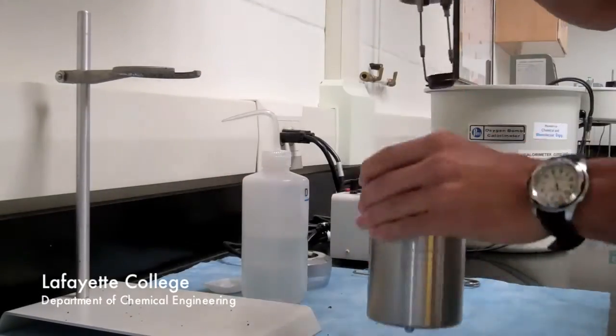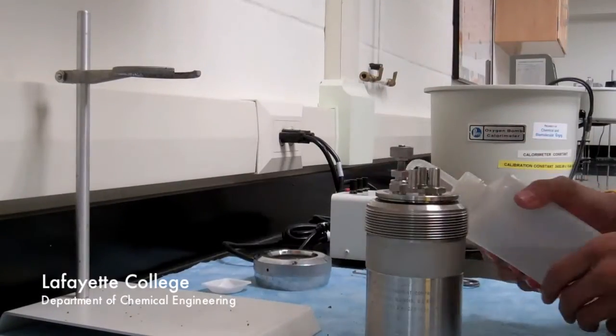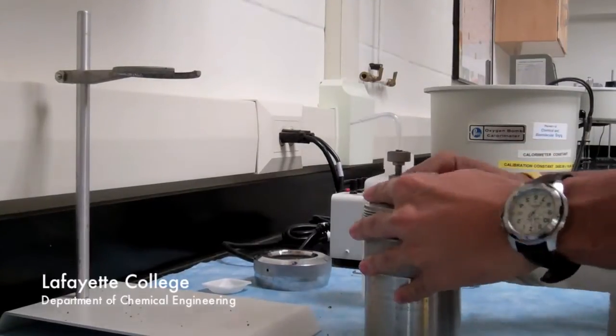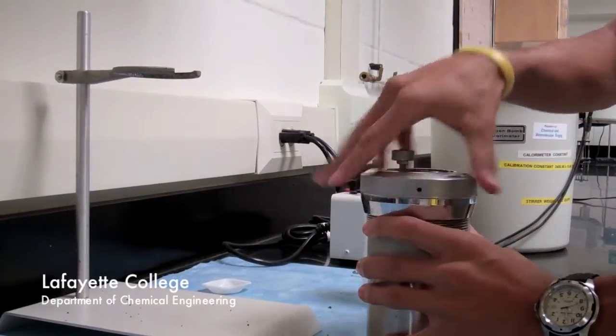Now, take the staging platform and lower it into the metal bomb. Wet the O-ring with DI water to make it slide in and out of the bomb easier. Push it in and screw the cap on tightly.